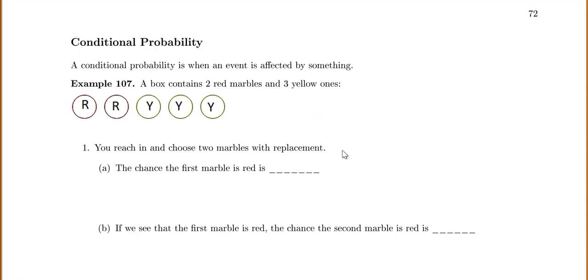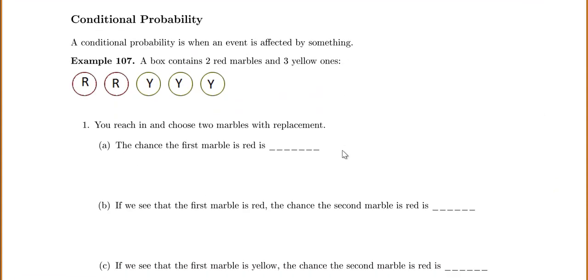This brings us to conditional probability — any time that an event is affected by something else, such as drawing without replacement.